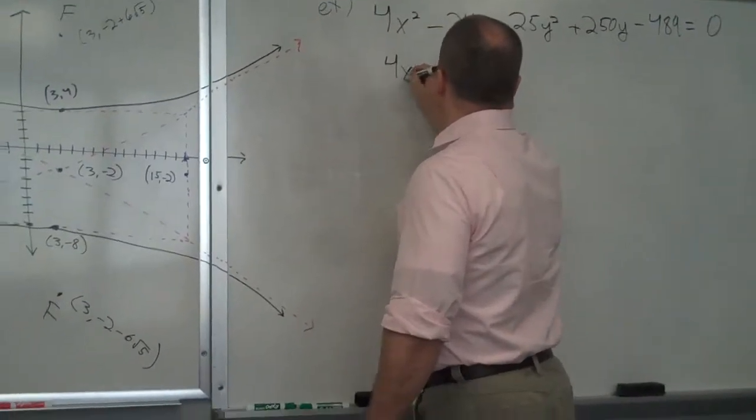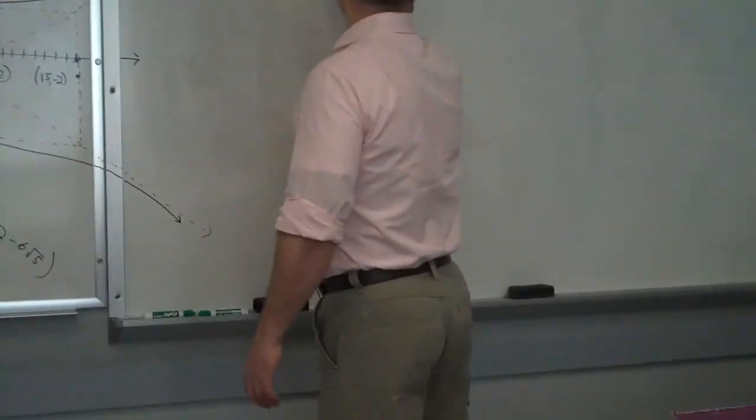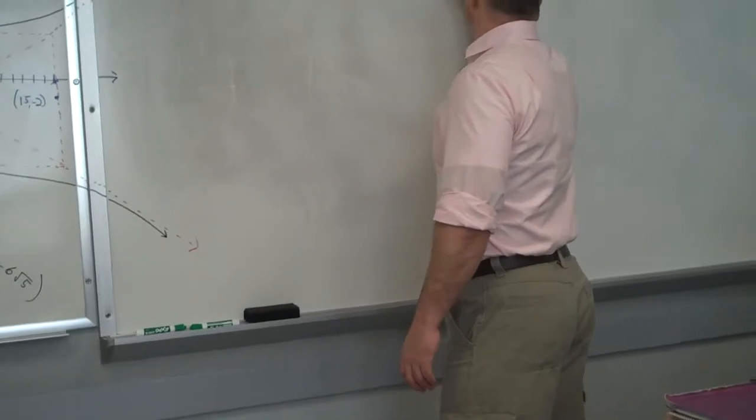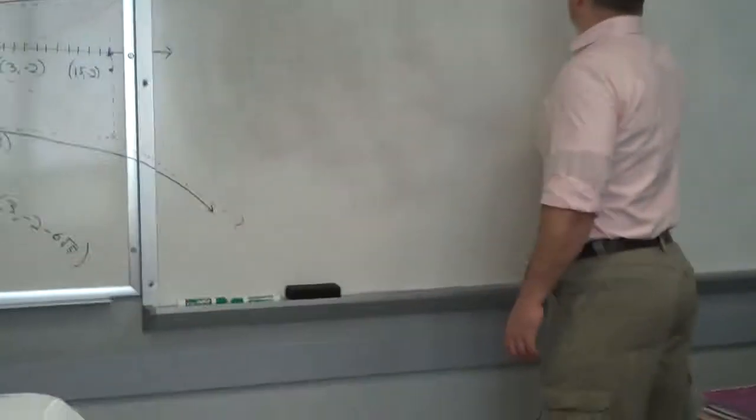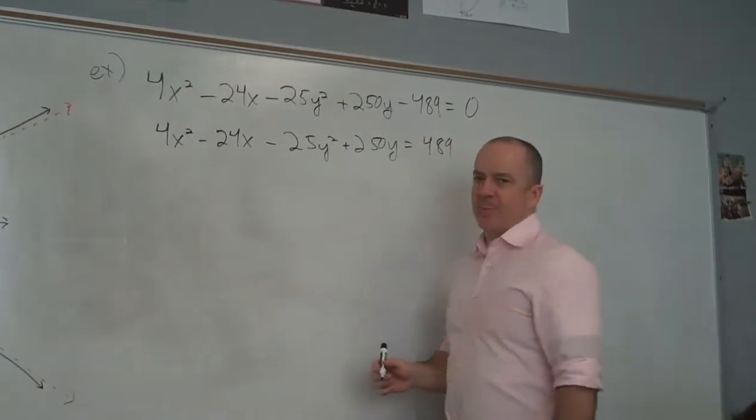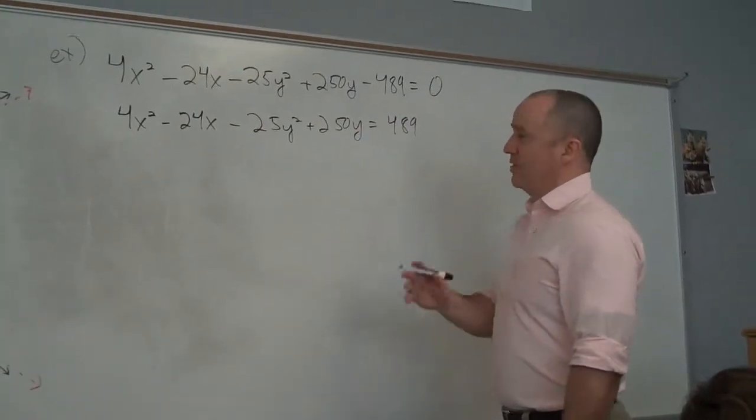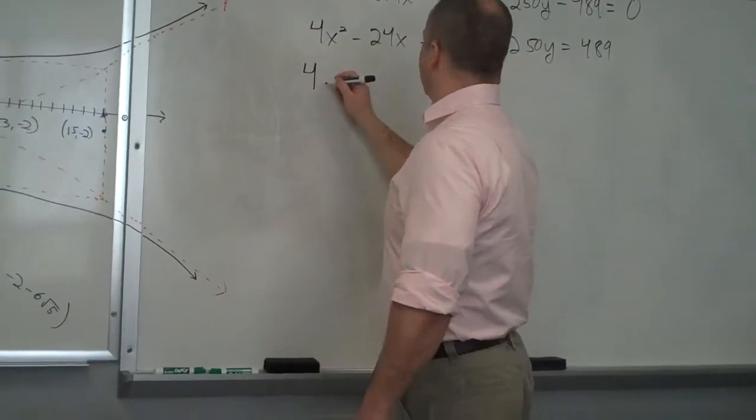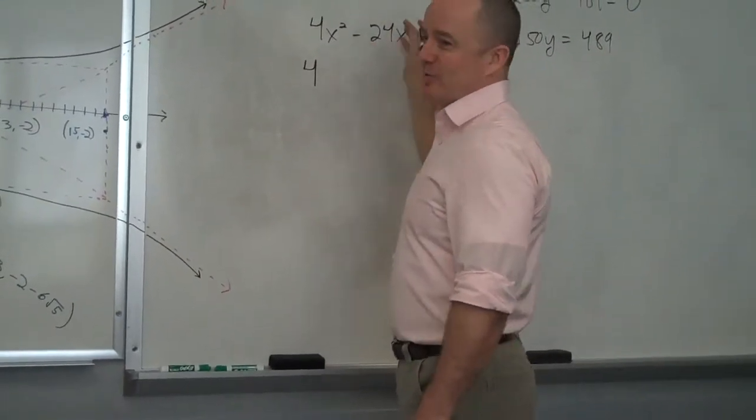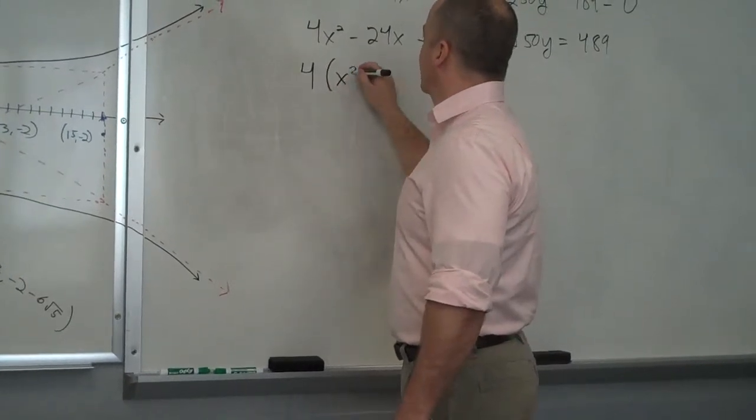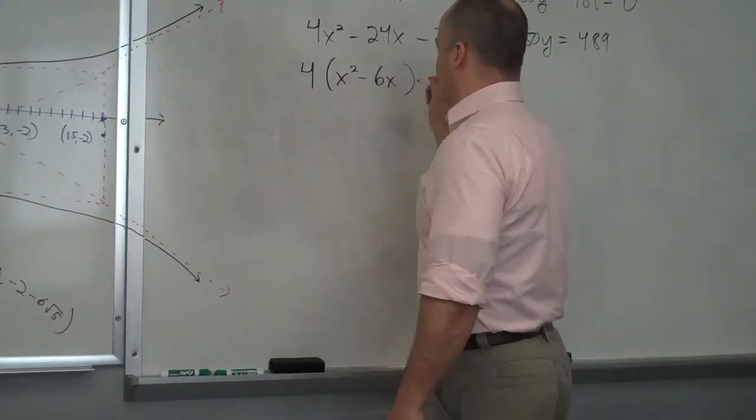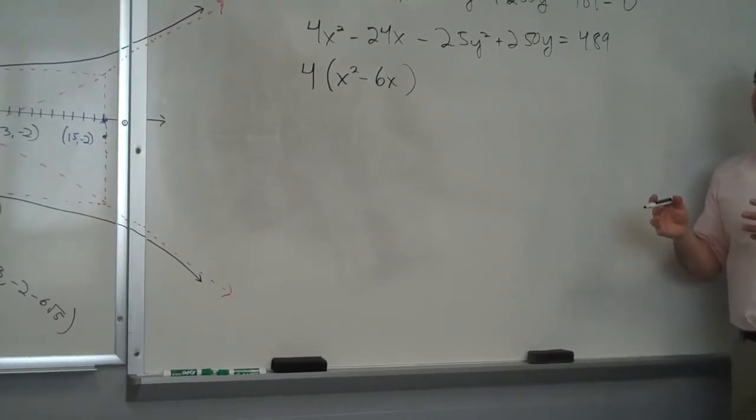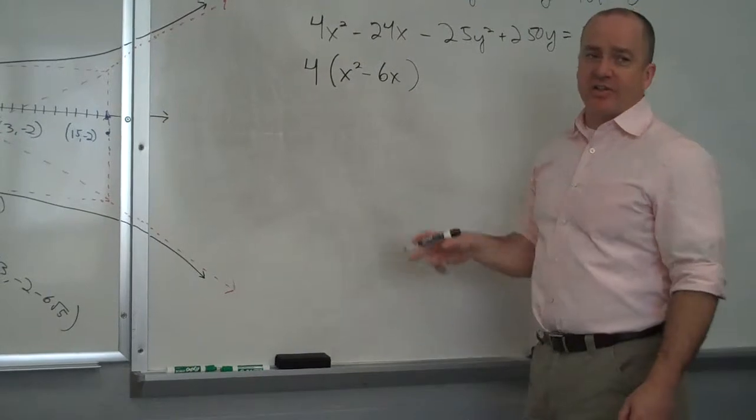So 4x squared minus 24x minus 25y squared plus 250y equals 489. Yeah, it'll be positive, because all we're going to do is add to this side. I take out the 4, and I'm left with x squared minus 6x, correct? Because completing the square, which we're going to do next, only works when you have a 1 coefficient in front of the x squared.